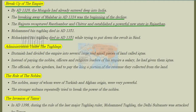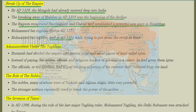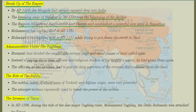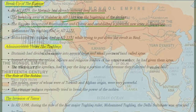How did the empire of Muhammad bin Tughlaq break up? In AD 1329, the Mongols entered deep into India. Malabar broke away in AD 1334, marking the beginning of the decline. Rajputs captured Ranthambore and Chittor and established a powerful state in Rajasthan. Muhammad bin Tughlaq died in 1351 while trying to put down a revolt in the Sindh region.